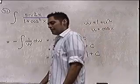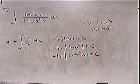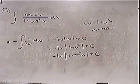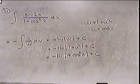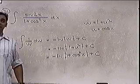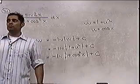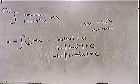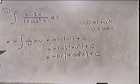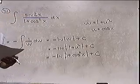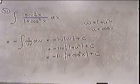That was the first problem, where not only did we have to use a double angle identity, we also had to use substitution twice. Is that the only way to do the problem? I don't know — there might be another way. That's the way I saw it, so that's the way I did it.